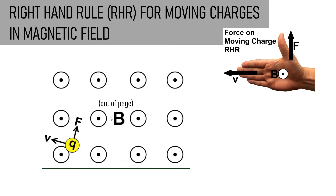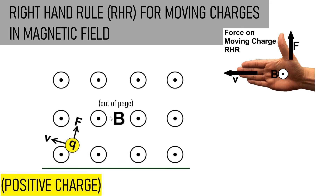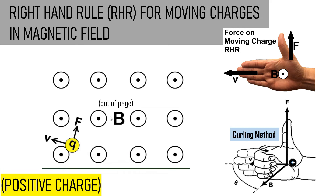Here's how the right-hand rule works: hold your hand open and point your thumb 90 degrees to your fingers. Your thumb will point in the direction of the force. The direction of the magnetic field follows the direction your palm is facing — your palm shows that B is out of the page. Your fingers show the direction of velocity for a positive charge. You can also curl your fingers naturally from V toward B to show the cross-product relation between V and B.